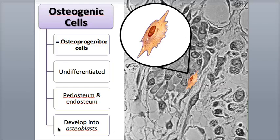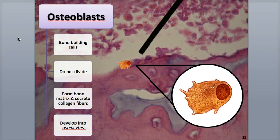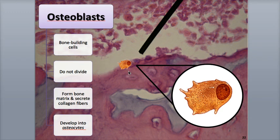The cells produced from osteogenic cell divisions through mitosis develop into osteoblasts. Osteoblasts are non-dividing cells that build up the bone — the suffix 'blast' means to bud or to grow. They secrete the collagen fibers, help develop the matrix, and start the calcification process. Similar to painting oneself into a corner, the osteoblasts surround themselves with the matrix that they produce and become trapped, and are now referred to as osteocytes.